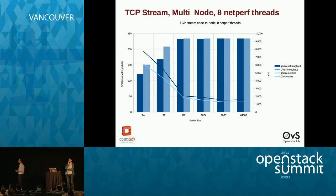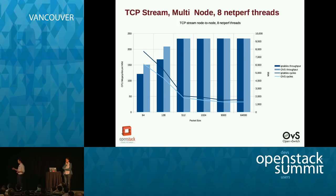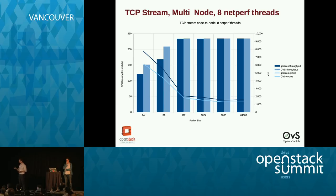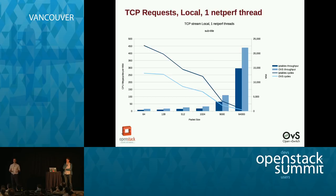Moving to multi-node — going over the network over a 10 GigE NIC — we are hitting line rate at 512-byte packet sizes. Interestingly, both the IP tables solution and the OVS solution achieve the same performance at line rate, but OVS is using less CPU cycles. For smaller packet sizes, OVS is doing better and consuming less cycles per megabit.